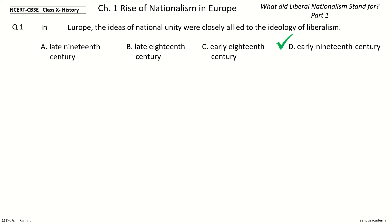And the answer is early 19th century. So, in early 19th century Europe, the ideas of national unity were closely allied to the ideology of Liberalism.